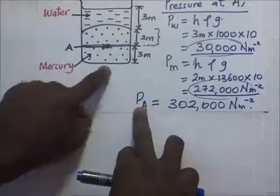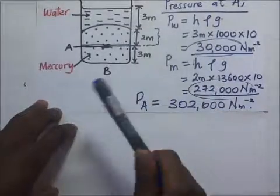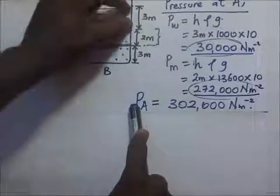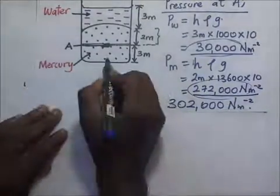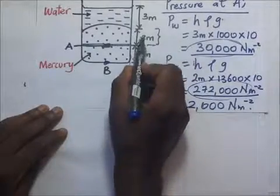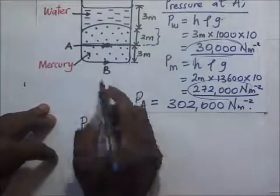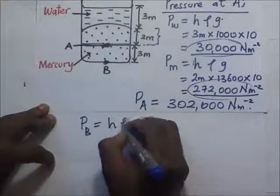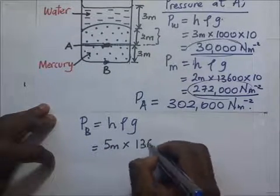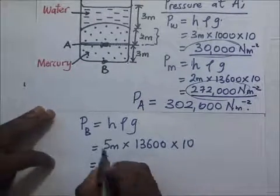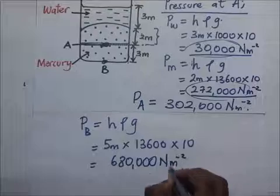The pressure at point B is the sum of the pressure from the mercury column plus the water column. The pressure exerted by the water column is the same 30,000 N/m². However, point B is lower, so the mercury column above it is longer — 3 + 2 = 5 meters. The pressure exerted by mercury at point B is 5 m × 13,600 kg/m³ × 10 = 680,000 N/m².